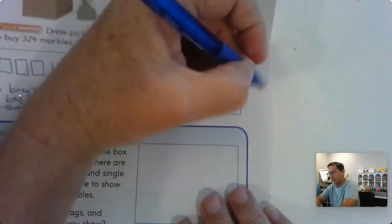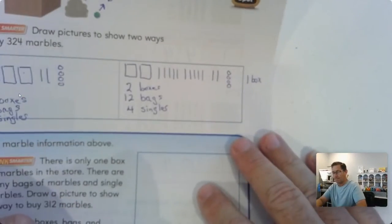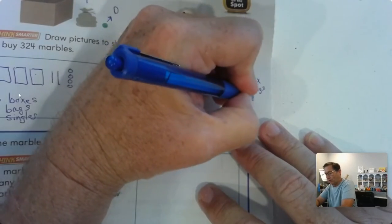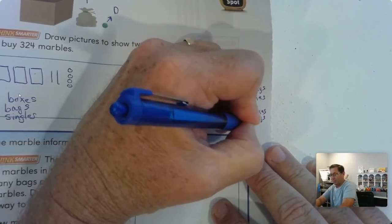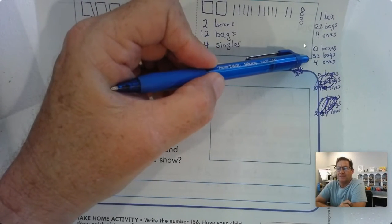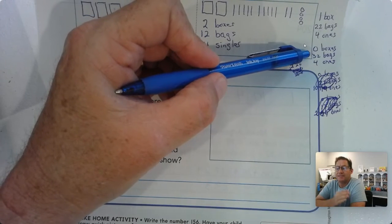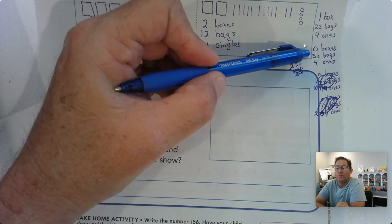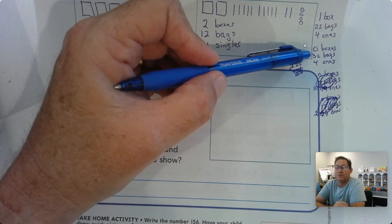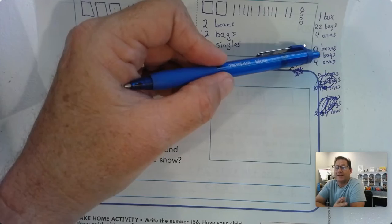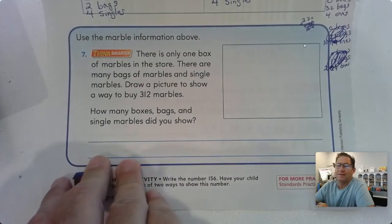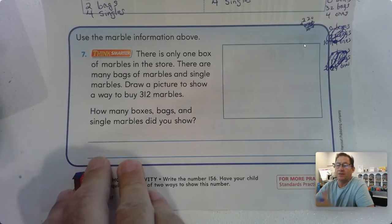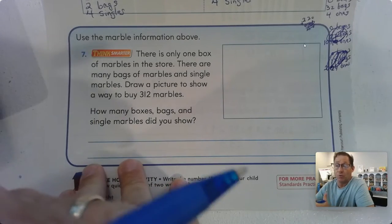That's not the only way. We could have one box with 22 bags and four ones. We could have had zero boxes and 32 bags and four ones and so on. So we could have zero boxes, 32 bags because 30 bags - each of those 30 bags has ten marbles. So remember that ten tens is a hundred. So 30 bags would be 300 and then two extra bags of ten would be 20. So 324. And then we could go on some other ones and we could have like 22 bags and 104 ones. We could have 12 bags and 204 ones. We'd have two bags and 304 ones, so on.